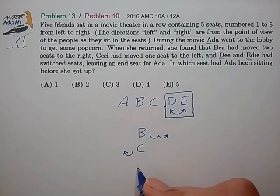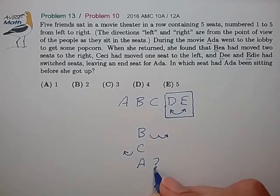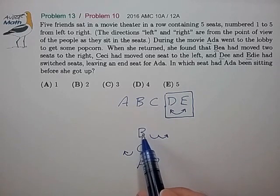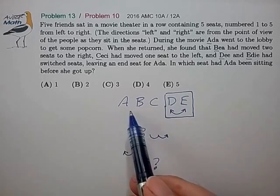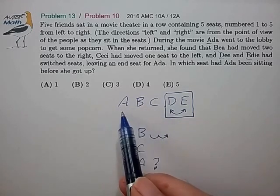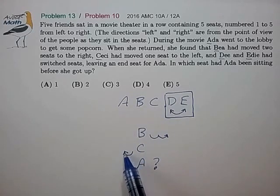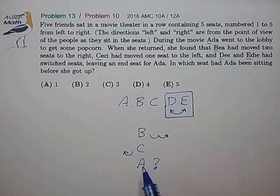And then the question is, well, what did Ada do? So that's kind of a question mark here. And what I notice is that since they're occupying the same three seats, ultimately, if B is moving two seats to the right and C is moving one seat to the left, what that means is that A must have moved one seat to the left.